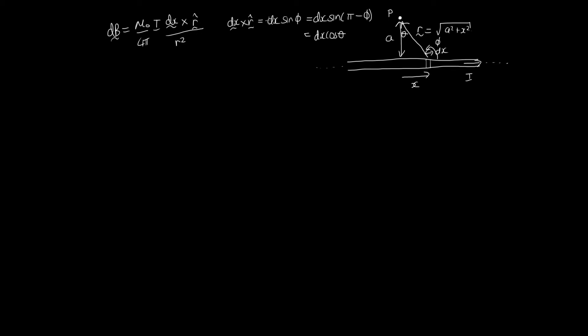And then this is a vector it does have a direction and the direction in this case is out of the screen. So we should also evaluate r squared because we've got r is equal to the square root of a squared plus x squared. So r squared is equal to a squared plus x squared. So let's substitute these in now to our equation here. We've got this is mu naught divided by 4 pi then times i and then we've got dx cos theta and that's out of the screen. I won't write out of the screen again but we'll remember that's the direction and then divide by a squared plus x squared.